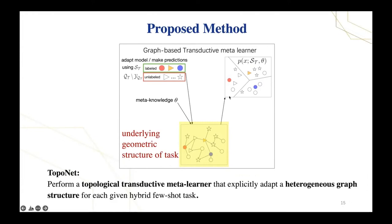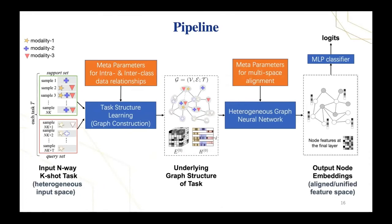This figure shows an overview of our network. It consists of three modules. First, a structured learning module is used to capture inter- and intra-class relationships between data points that share the same type of feature. Second, we have a heterogeneous graph neural network to capture the relationship between different feature spaces. Finally, we use a multi-layer perceptron as the classifier.